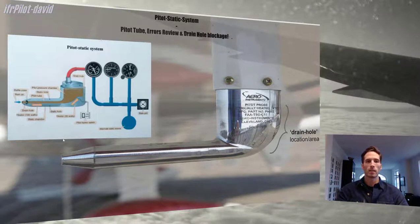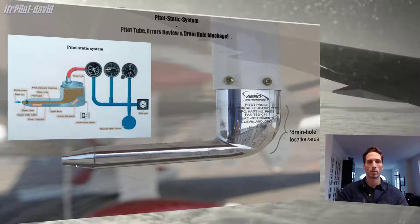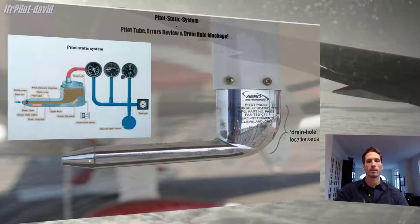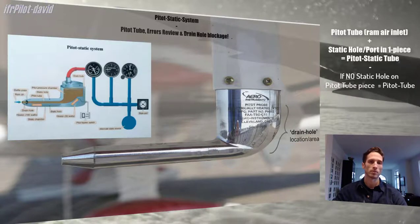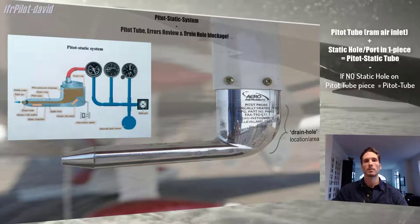Some pitot tubes have more than one drain hole, as visible on this picture. This one is another drain hole just below the Ram Inlet. The drain hole is usually located in the backside of the pitot tube, somewhere where it's only receiving undisturbed airflow or ambient air pressure. Regarding the static hole — that's nothing else but a static port. Some manufacturers like to combine a pitot tube with a static hole in one piece. Static hole is the same as a static port, so don't confuse the two as they look about the same.